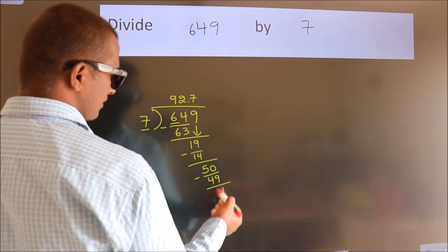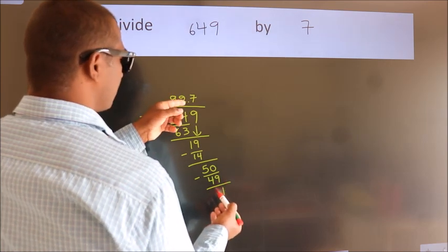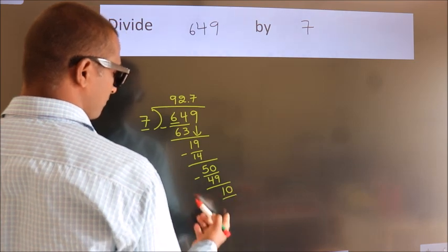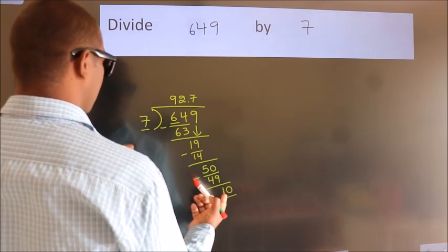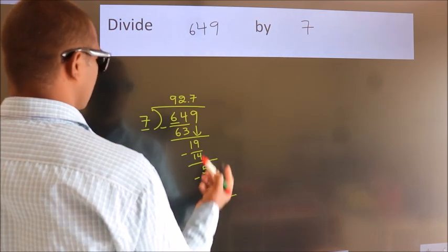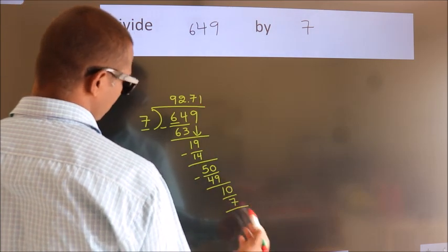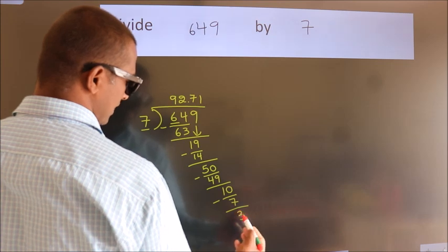After this, we already have the decimal. So directly take 0. So 10. A number close to 10 in 7 table is 7 once, 7. Now we subtract. We get 3.